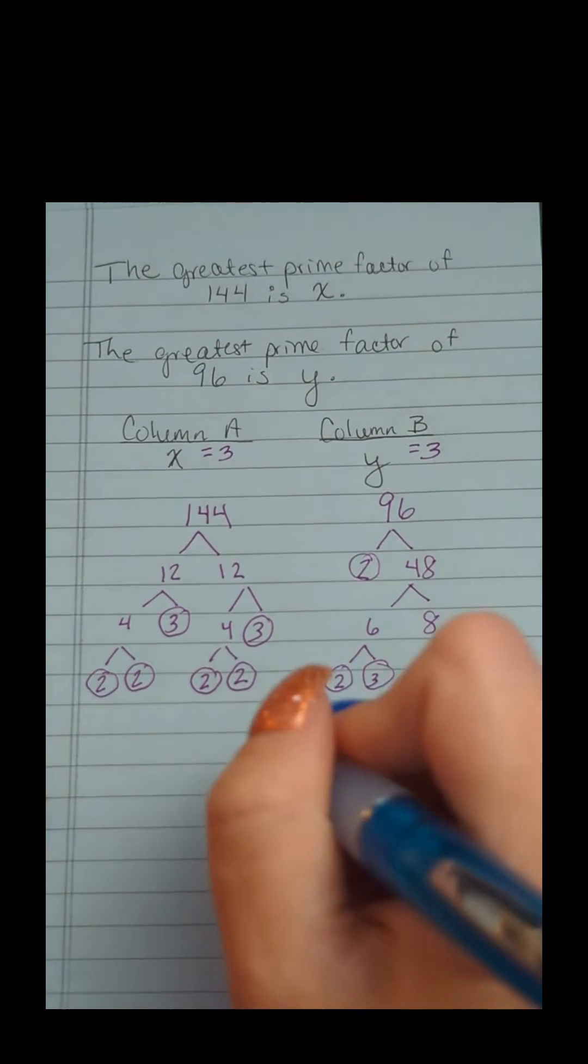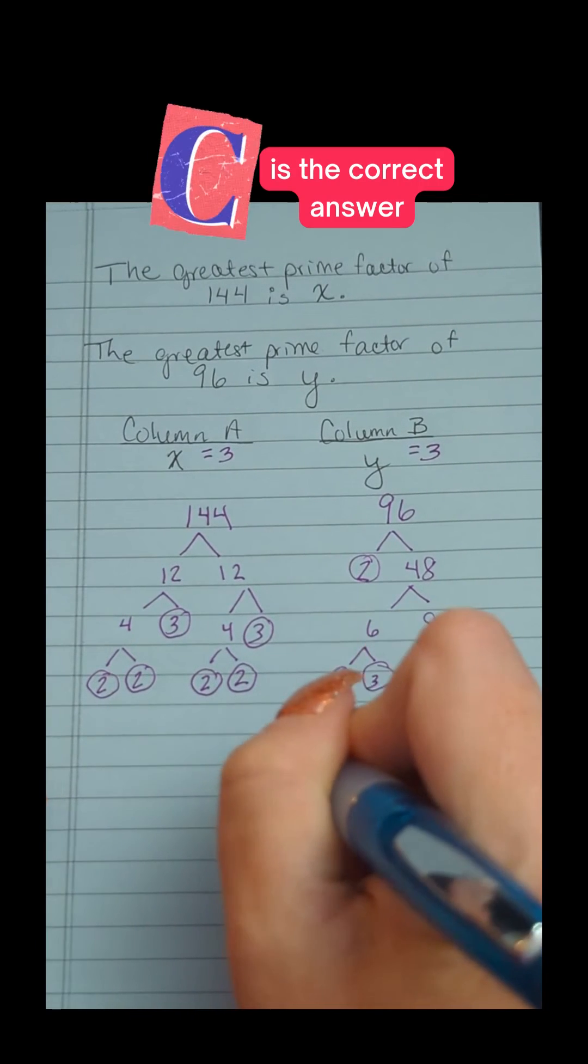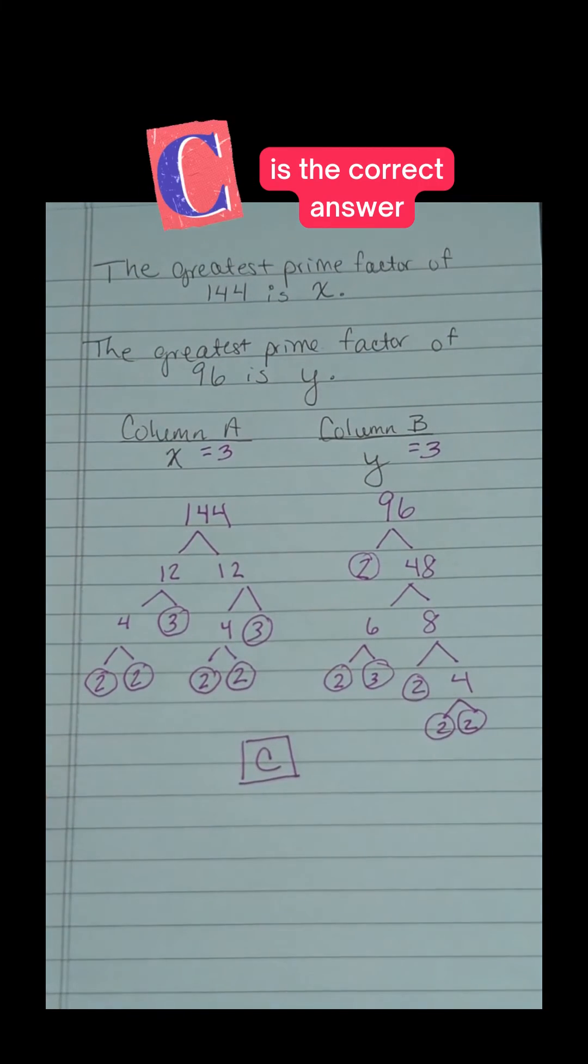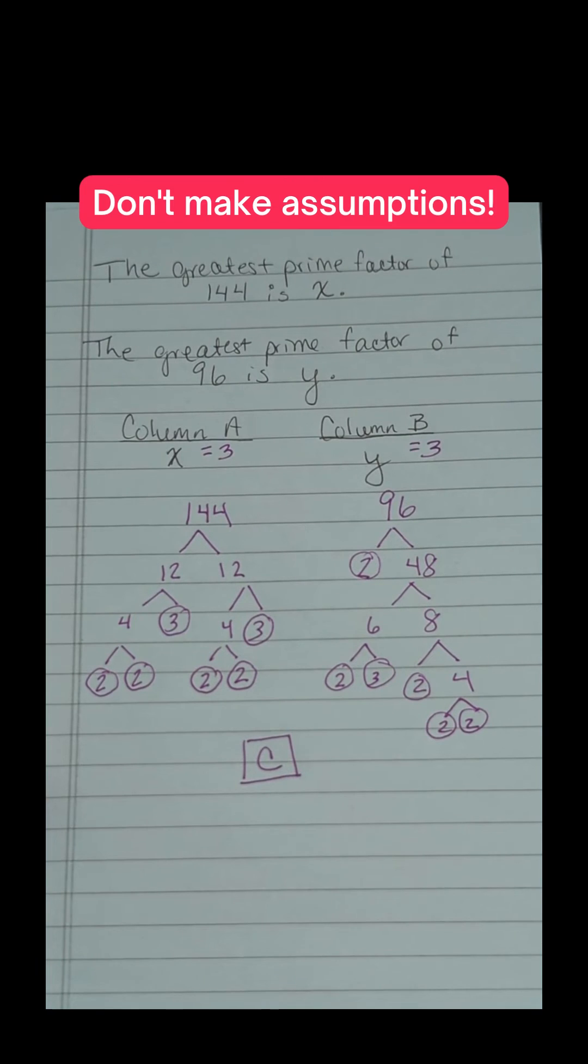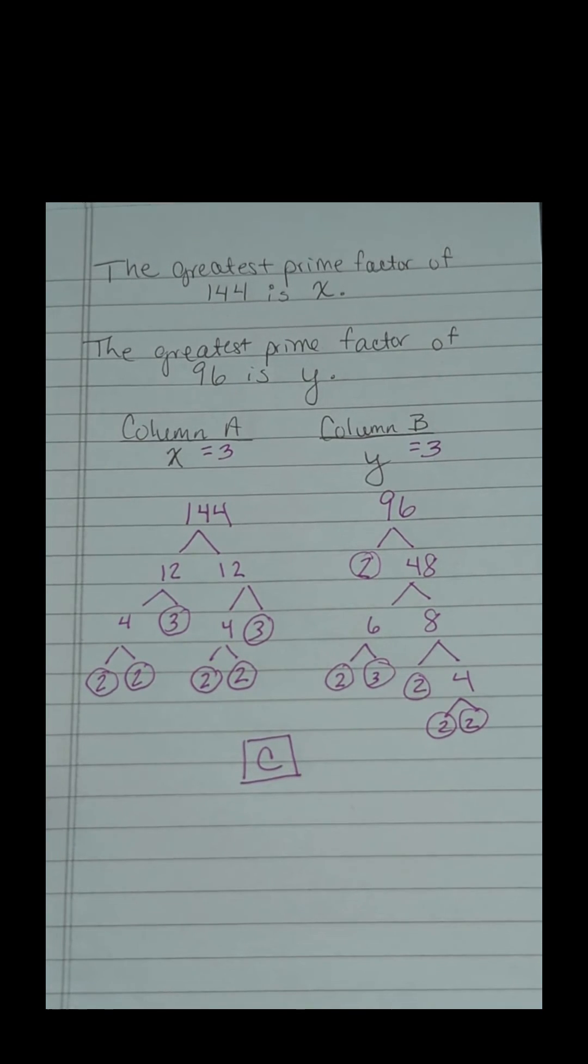We can prove then that the correct answer is C, the two quantities are equal. One major takeaway here is not to make assumptions based on what your gut thinks might be bigger. This test would love for you to see 144 is bigger than 96, and just automatically choose column A.